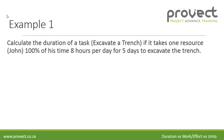Now let's do example one. Calculate the duration of a task — let's call it 'excavate the trench' — if it takes one resource, John, 100% of his time, that is eight hours per day for five days, to excavate the trench. The work or effort is five days at eight hours per day, so eight times five equals 40 hours.